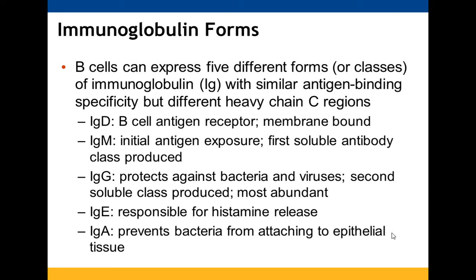There are five classes of immunoglobulins with different heavy chains: IgD serves as the B-cell antigen receptor and is membrane-bound; IgM is released during initial exposure; IgG is the most important, protecting against bacteria and viruses; IgE triggers histamine release in allergic reactions; IgA prevents bacteria from attaching to epithelial tissue.